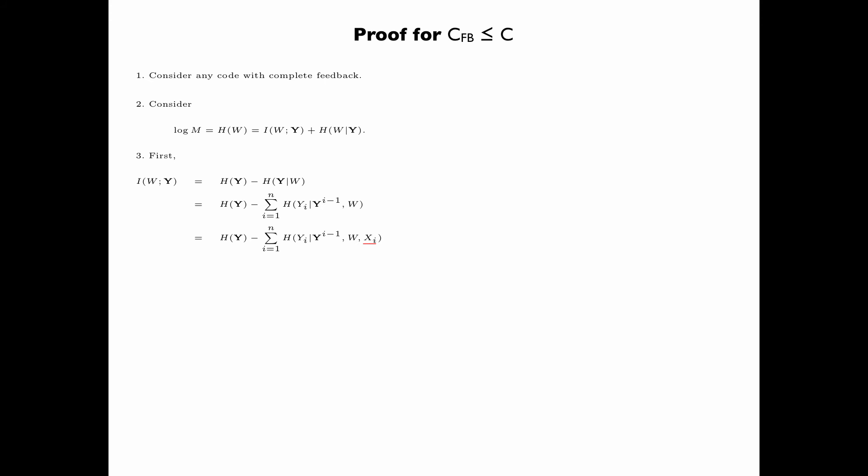Now, we insert the random variable X_i in the conditioning in the i-th term of the summation. This is valid because in a feedback code, X_i is a function of W and Y^(i-1). In other words, by inserting X_i, we do not add any new information in the conditioning. Now, by Lemma 7.22, because Y_i is independent of W and Y^(i-1) given X_i,